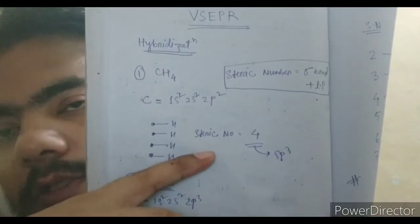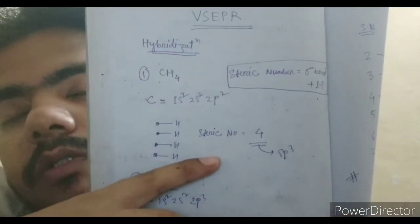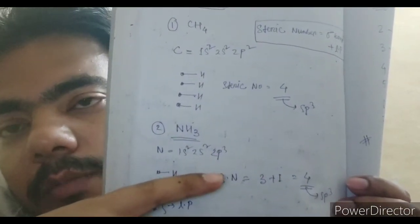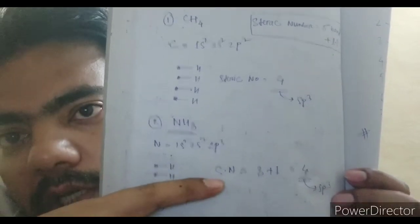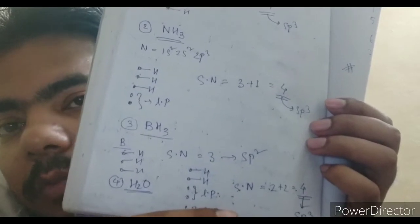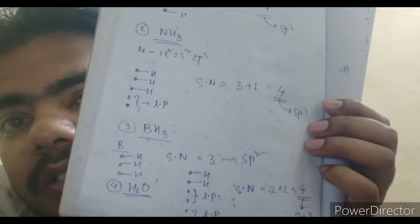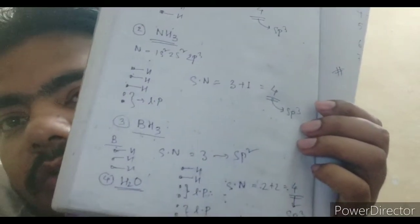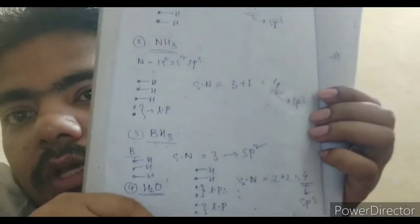Now I can tell you the difference. Methane has tetrahedral geometry and tetrahedral shape because there is no lone pair. NH3 has tetrahedral geometry but its shape is trigonal pyramidal. Water's geometry is also tetrahedral, but the shape is bent — a bent shape. So all three have the same geometry but different shapes. If you want to take a screenshot, you can.